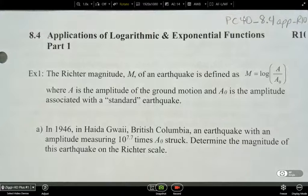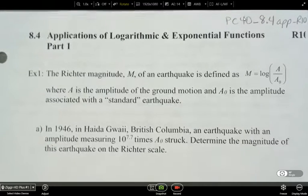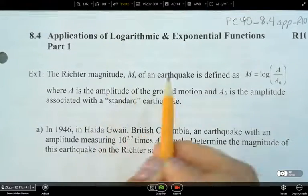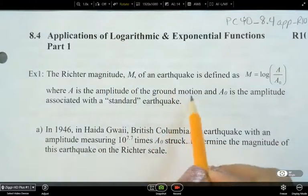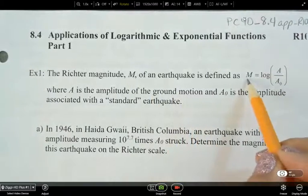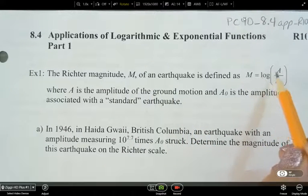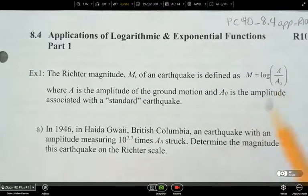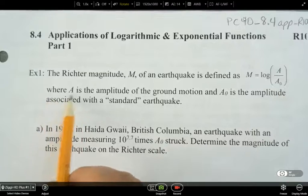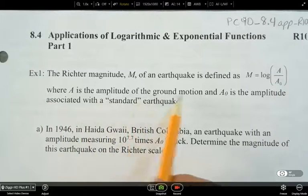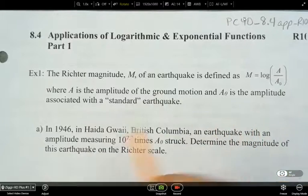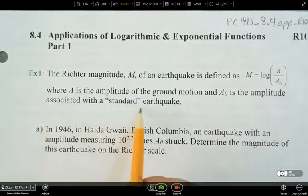Example one. So we're looking at the Richter scale, and the Richter magnitude, M, of an earthquake is defined as, and here's the equation, M equals the log of A divided by A naught. Here, A is the amplitude of the ground motion, and A naught is the amplitude associated with a standard earthquake.